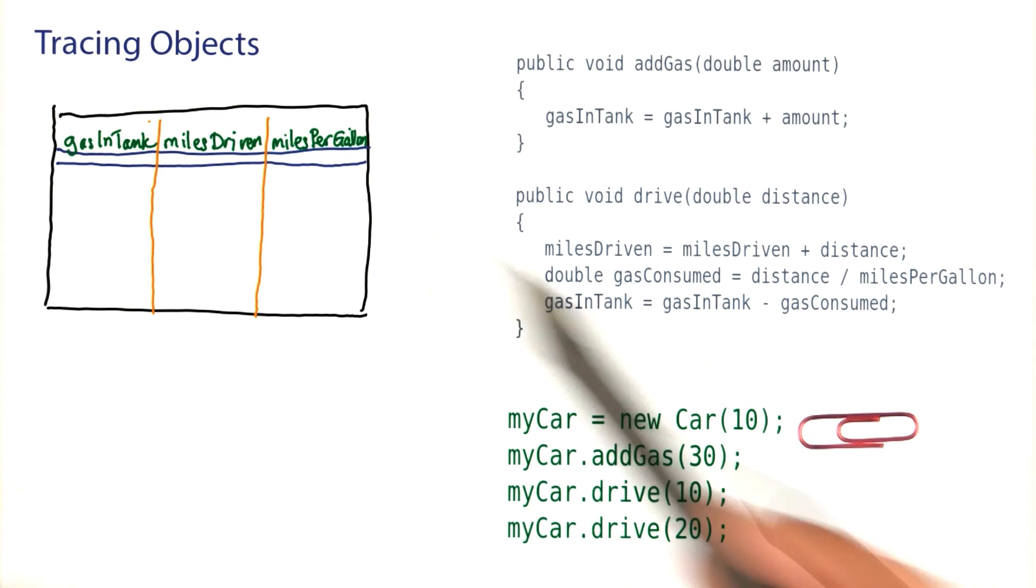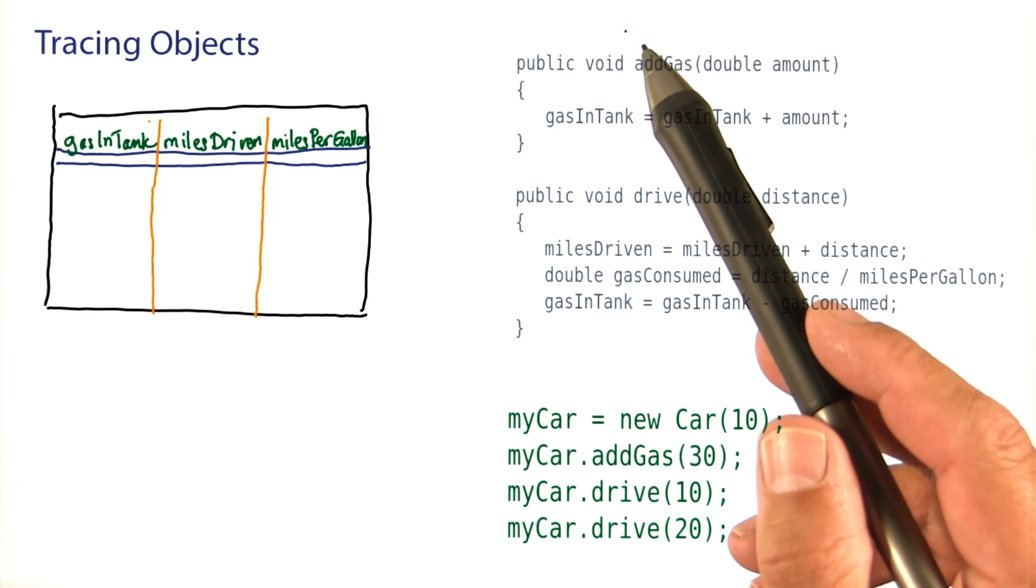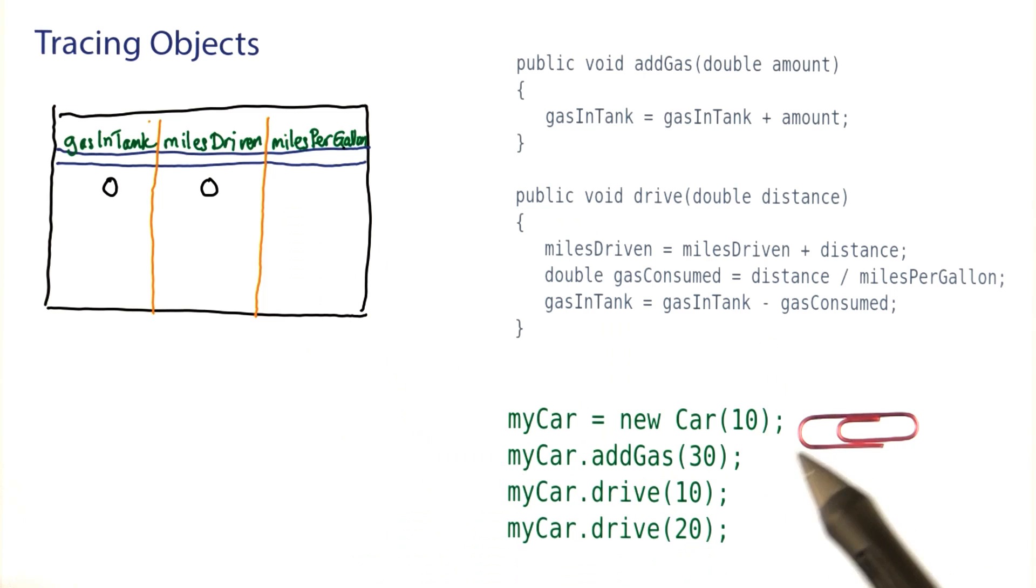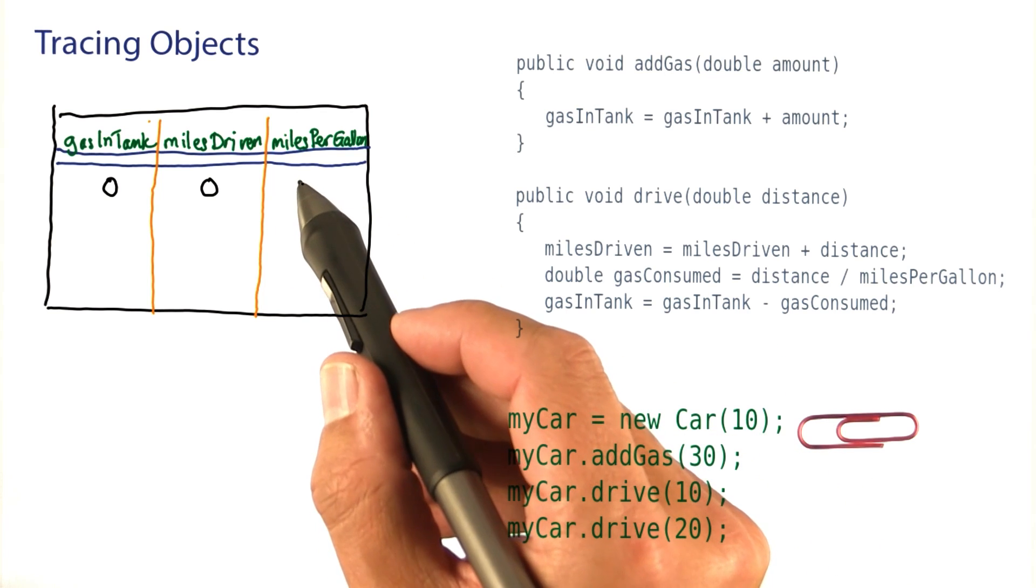We construct a car. That initializes the instance variables. I didn't have room to put in the code for the constructor, but hopefully you remember. The gas in tank and miles driven are initialized to zero. The miles per gallon with the parameter in the constructor. Let's move on.